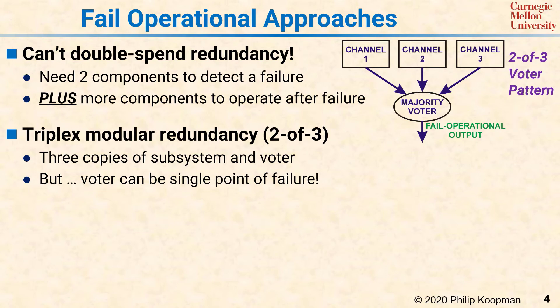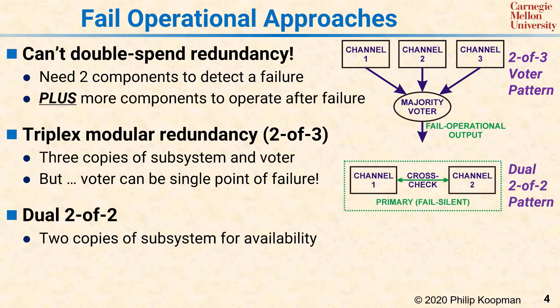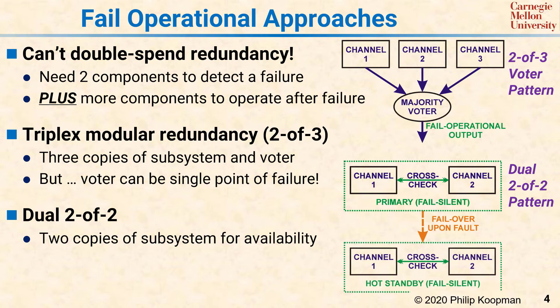A commonly used approach to get past the voter bottleneck is the dual 2-of-2 approach. A 2-of-2 cross-checked pair is used as the primary control for the system. If there is a fault, the entire 2-of-2 block will shut down, which means you need a second block—also a 2-of-2 block—as a backup.